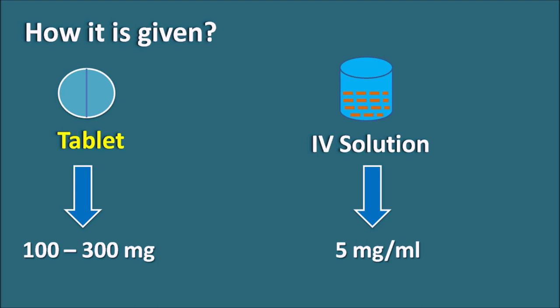In summary, Labetalol is both an alpha and beta blocker. By blocking alpha receptors, it produces a vasodilatory response. By blocking beta receptors, it decreases the rate and force of contraction, thereby decreasing cardiac output and cardiac work. Through both of these actions, Labetalol decreases cardiac work and increases cardiac efficiency, lowering blood pressure to serve as an antihypertensive. It can produce orthostatic hypotension and flushing due to alpha blockade, and fatigue, dizziness, and drowsiness due to beta blockade.